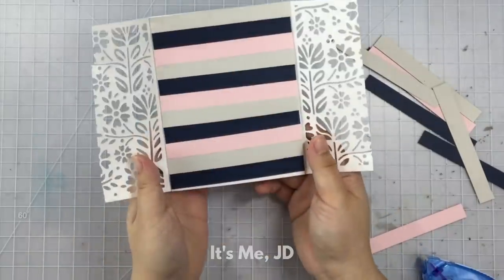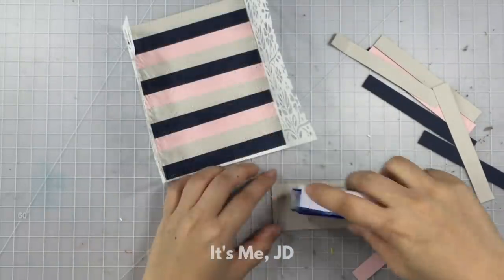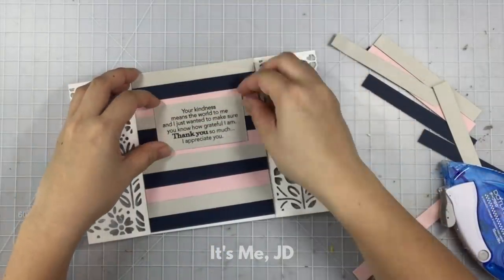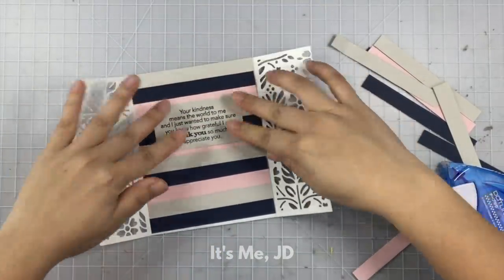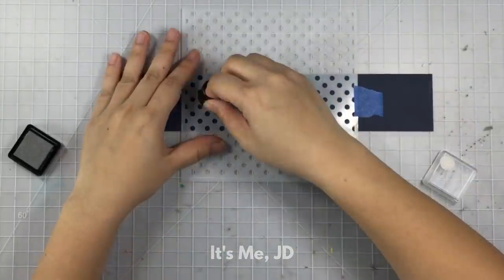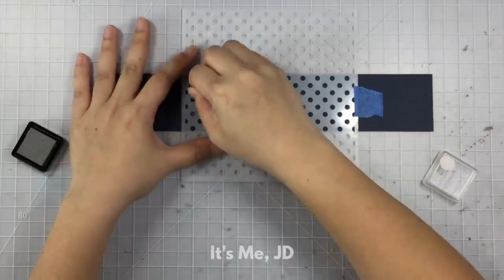Once that is adhered I'm going to work on the inside sentiment using another scrap. I just stamped my inside sentiment on it and then adhered it to the inside of my card. Since my entire card is looking a little busy I wanted to stick with a basic belly band.